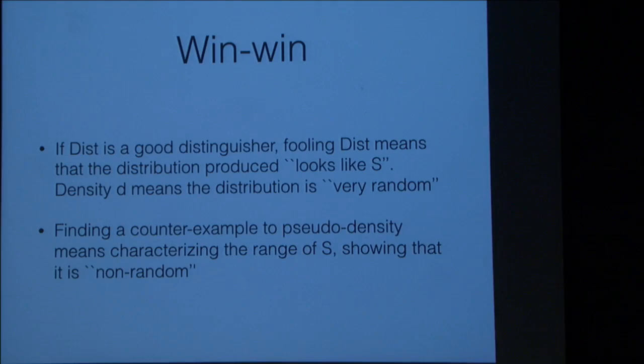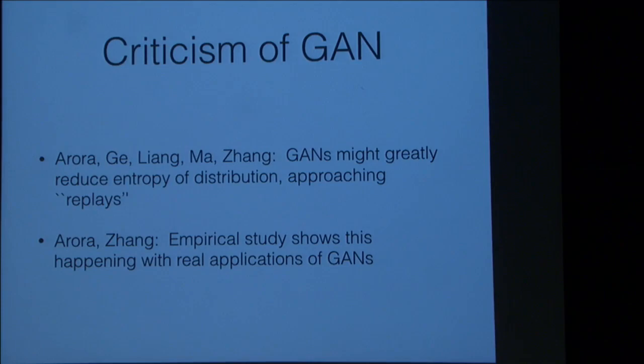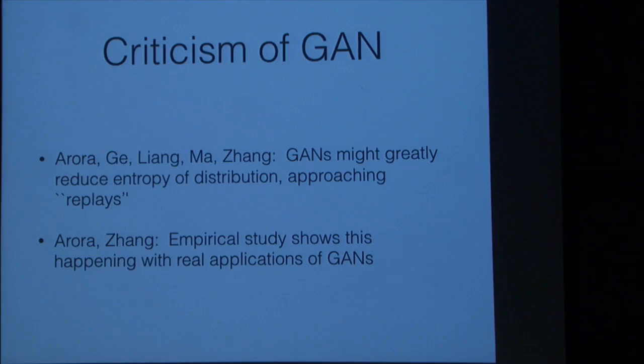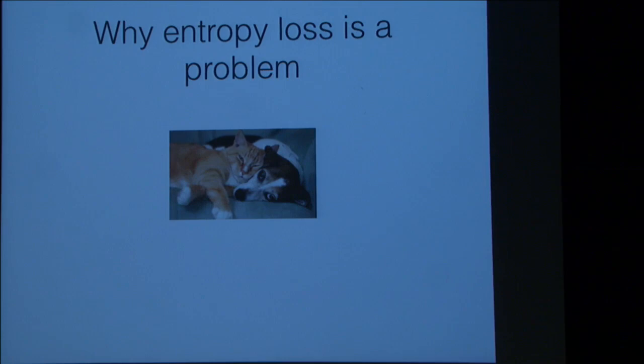What we get from this is either a distribution of density at least D that fools the distinguisher, or a guarantee that no such distribution exists — a single strategy for the distinguisher that shows the distribution is not dense. Now, GANs themselves run into the following problem: at least sometimes they can be set up so that the function they're minimizing has a solution with relatively small entropy compared to the underlying distribution. Aurora and Zhang showed that this can actually happen in actual runs of GANs.